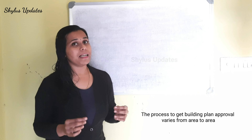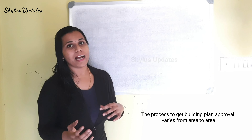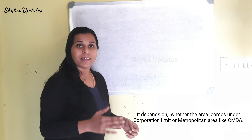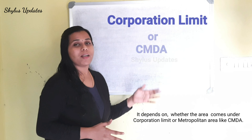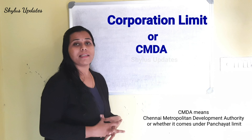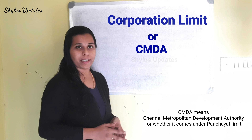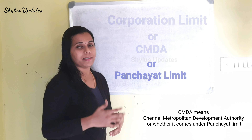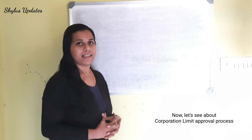The process to get building plan approval varies from area to area. It depends on whether the area comes under corporation limit, or metropolitan area like CMDA — Chennai Metropolitan Development Authority — or whether it comes under panchayat limit. Now, let's see the corporation limit approval process.